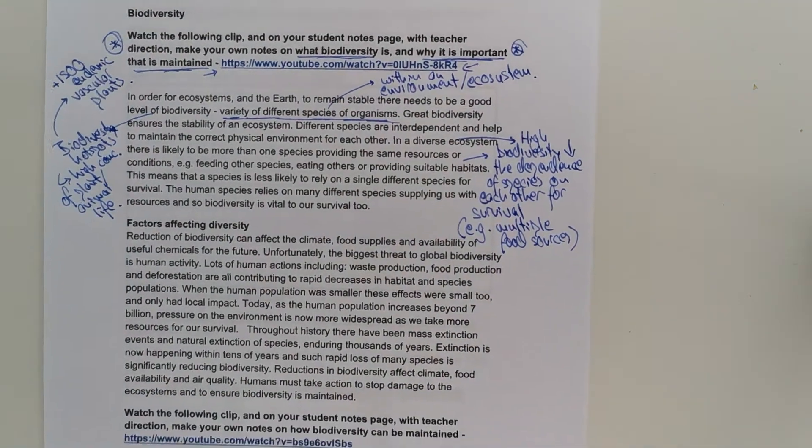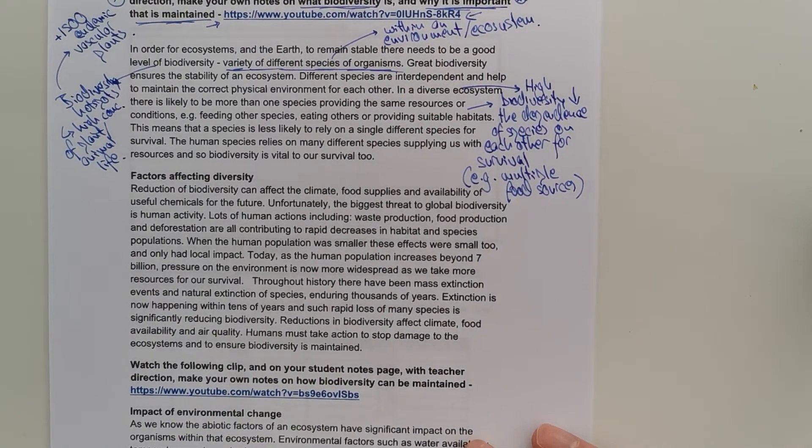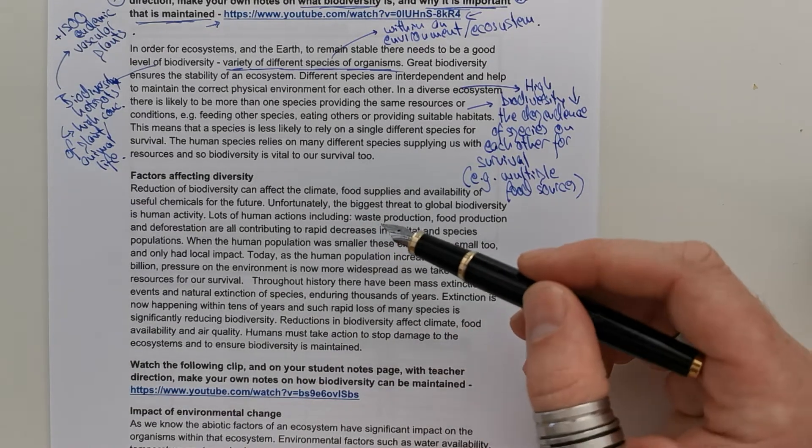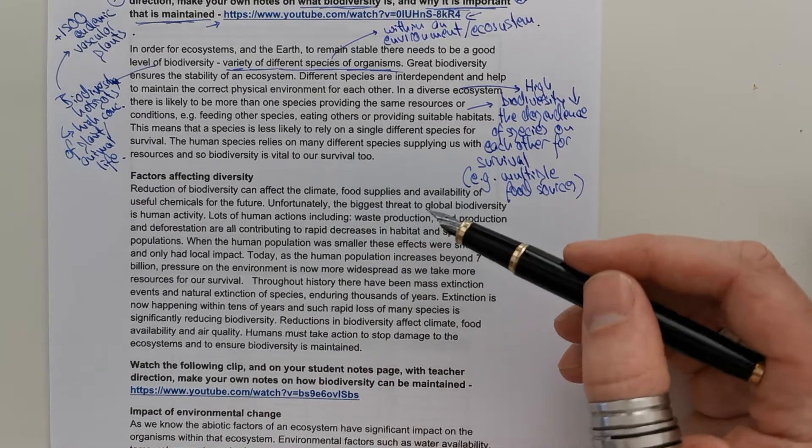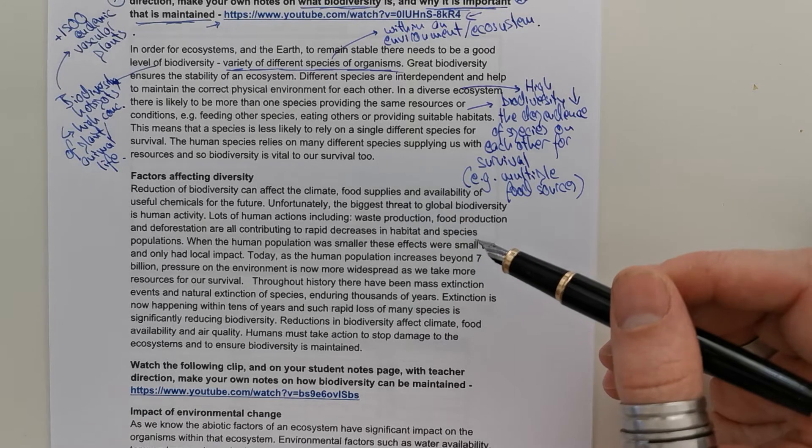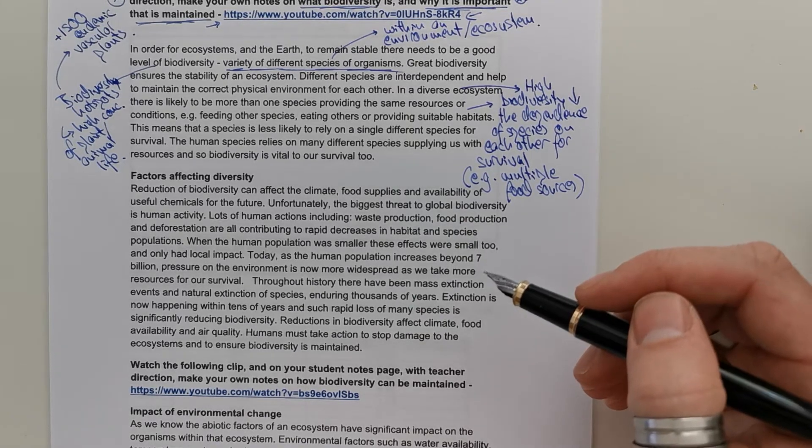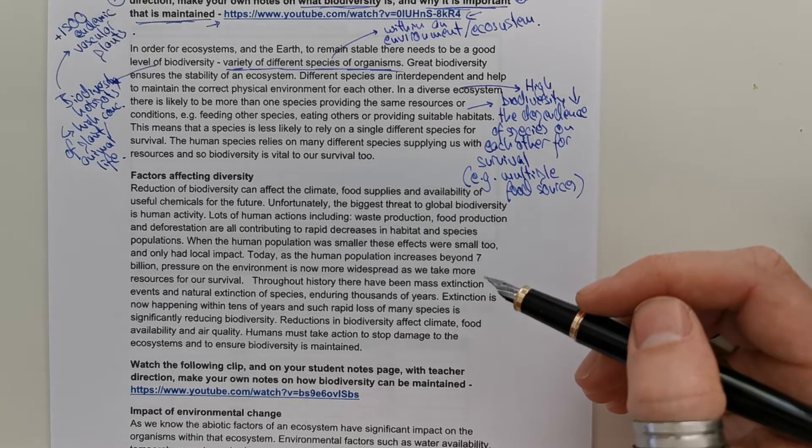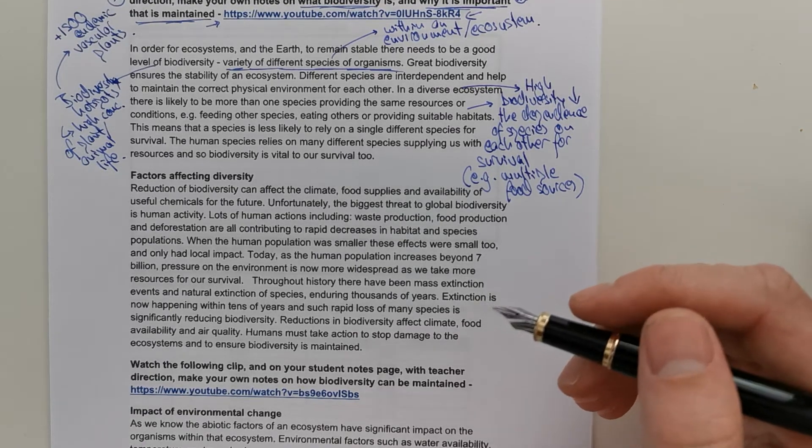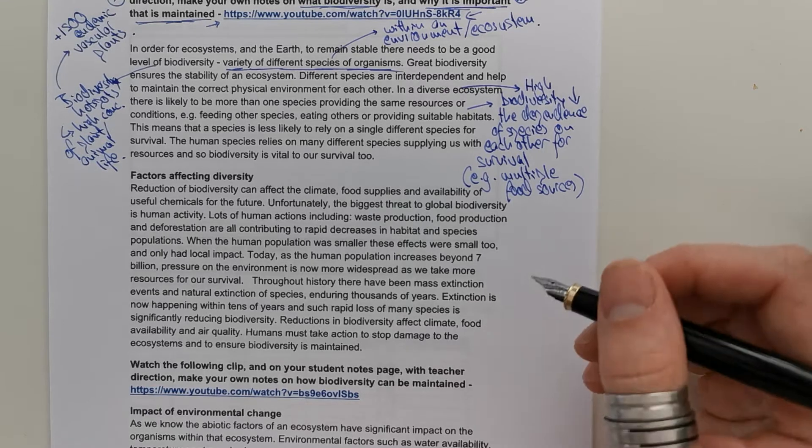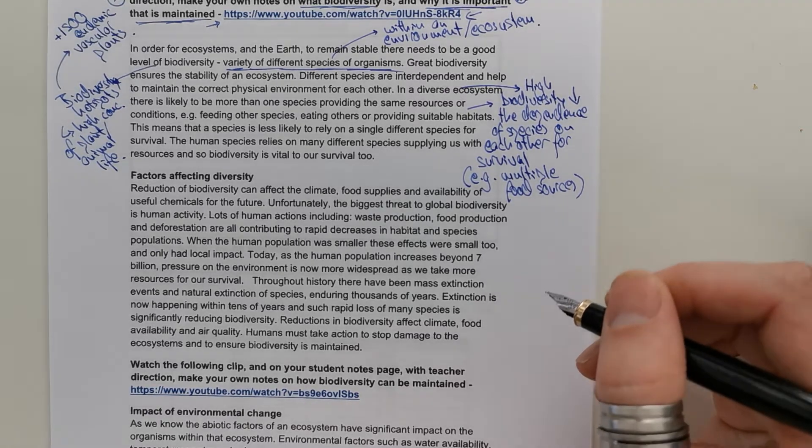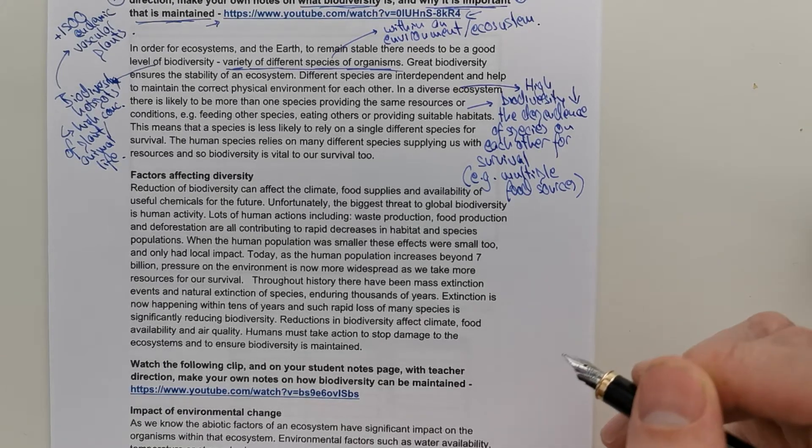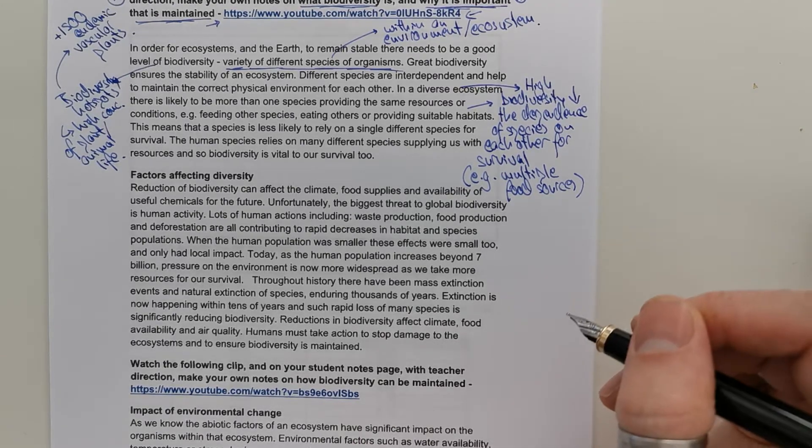Now, an important thing we have to consider are factors that affect biodiversity. So, a reduction of biodiversity can affect climate, food supplies, and availability of useful chemicals for the future. Unfortunately, the biggest threat to global biodiversity is human activity. Lots of human actions, including waste production, food production, and deforestation, are all contributing to rapid decreases in habitat and species populations.